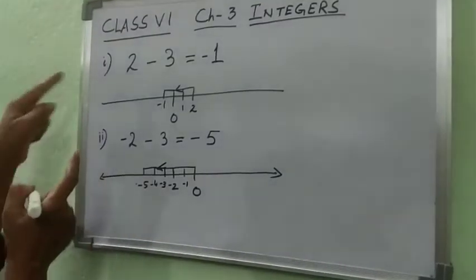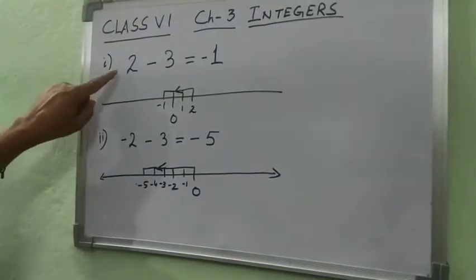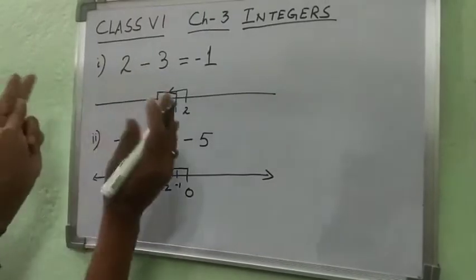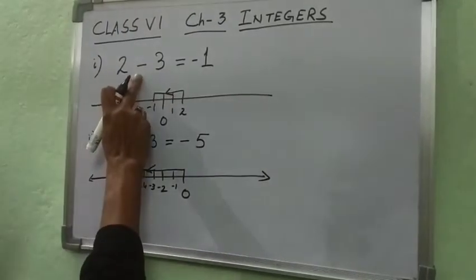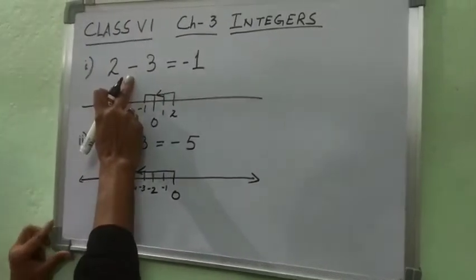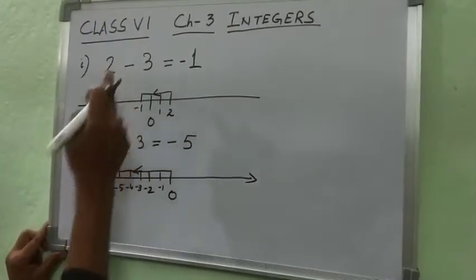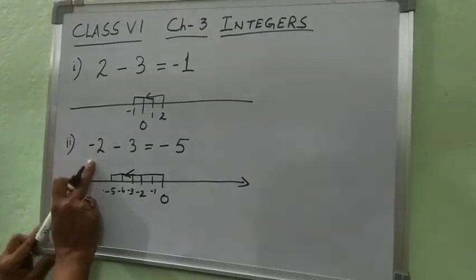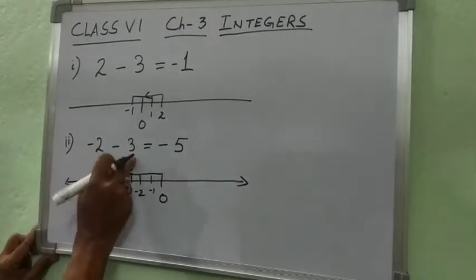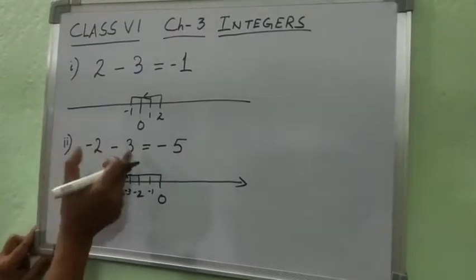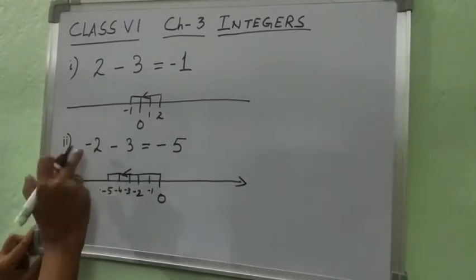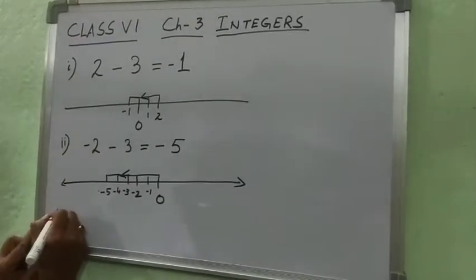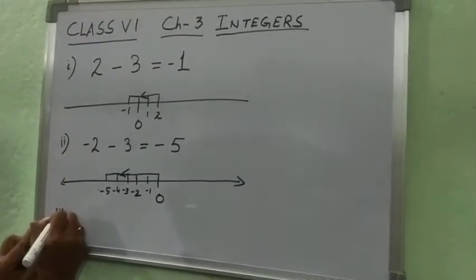Now here I have taken one positive and one negative number — both are positive numbers subtracting. And here one negative number and one positive number, or subtraction of one positive number and one negative number. Now the next question.